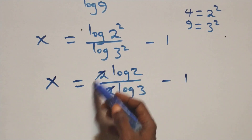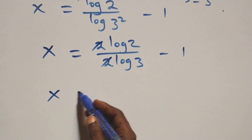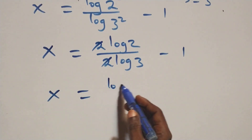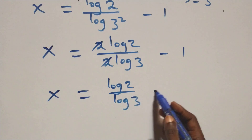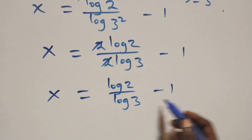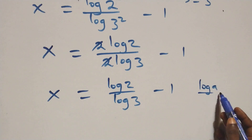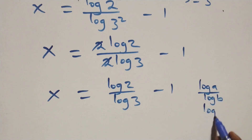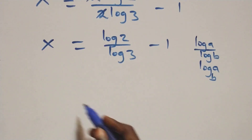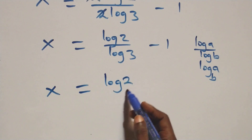The 2s cancel each other. We have x equals log 2 over log 3 minus 1. Applying the change of base rule — when we have log A over log B, that is the same thing as log A to base B — all we have becomes x equals log 2 base 3 minus 1.